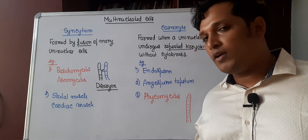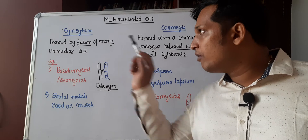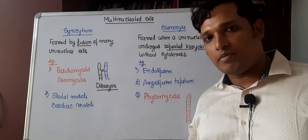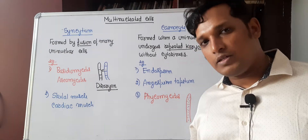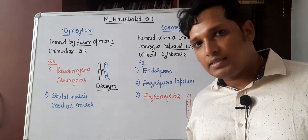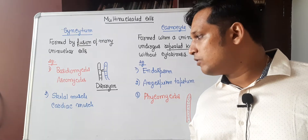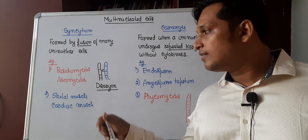As a result, one cell will have two nuclei — that stage is called the dicaryotic stage, and it is an example of syncytium. Skeletal muscle is a multi-nucleated cell, and cardiac muscle also has multiple nuclei, so it is an example of syncytium.